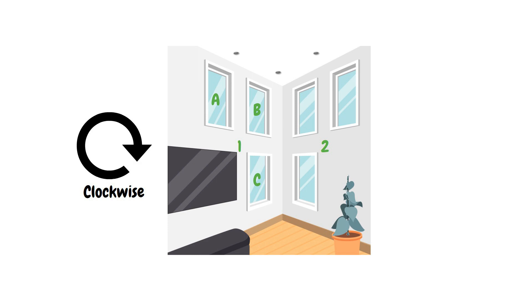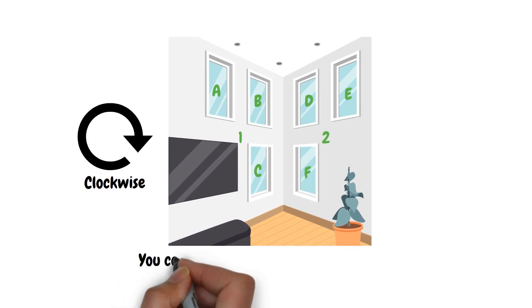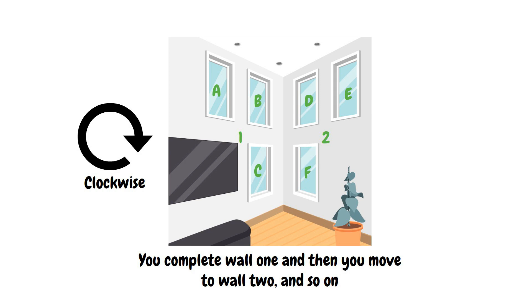Then we move to wall 2, starting in the top left, D, E, and then F. So you complete wall 1 and then you move to wall 2, and so on. On each wall you start top left, just like a piece of paper.